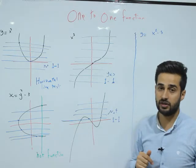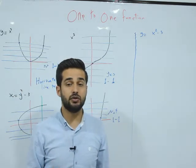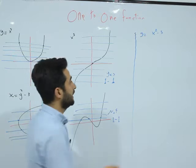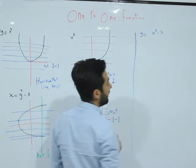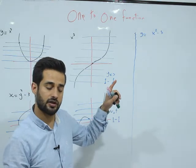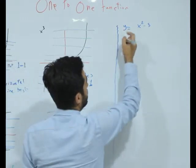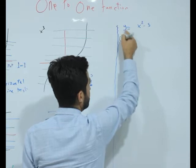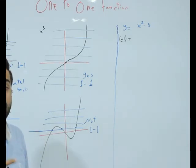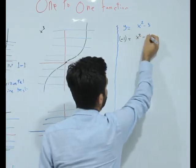Now, if you don't have the graph, how can you know if a function is one-to-one? Let's check this one: y = x² − 5. Give a value for y — which is in the range — let's say y = −1. Substitute −1 in place of y: if you get one answer for x, it is one-to-one; if you get two answers for x, it is not one-to-one.